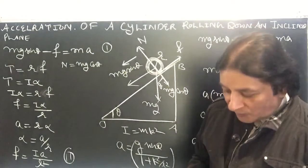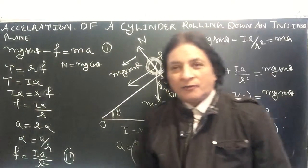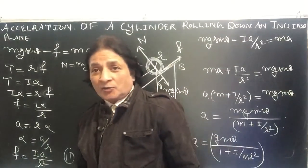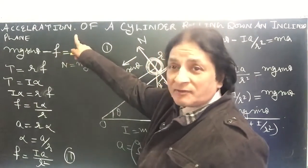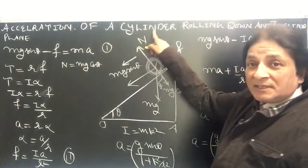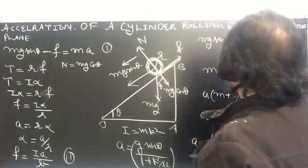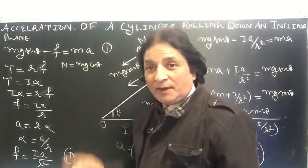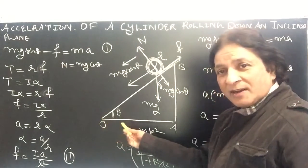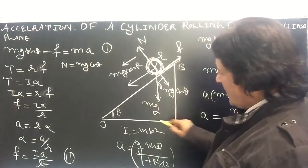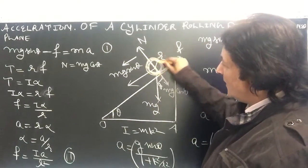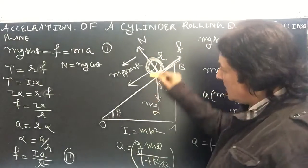Hello students, welcome to Vipan Sharma Physics channel. This is an English version of the concept: acceleration of a cylinder rolling down an inclined plane. We have an inclined plane AOB and a cylinder of mass m.